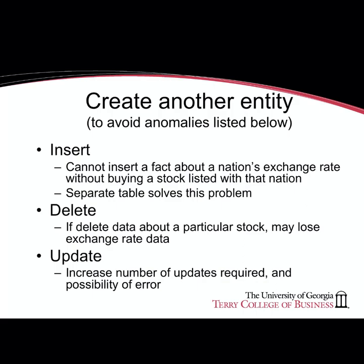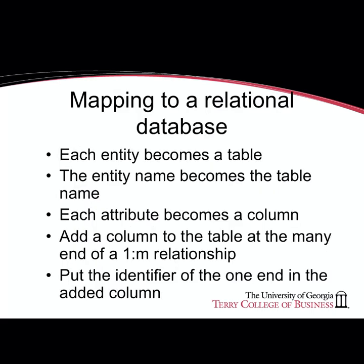To avoid these problems, instead of storing all data in one entity, we store data in multiple entities — specifically two entities in this case. Each entity becomes a table in the database: the entity name becomes the table name and each attribute becomes a column. To relate the two tables together, we add a column to the many end of the one-to-many relationship. In this example, that means adding a column to the stock table or to the course table.